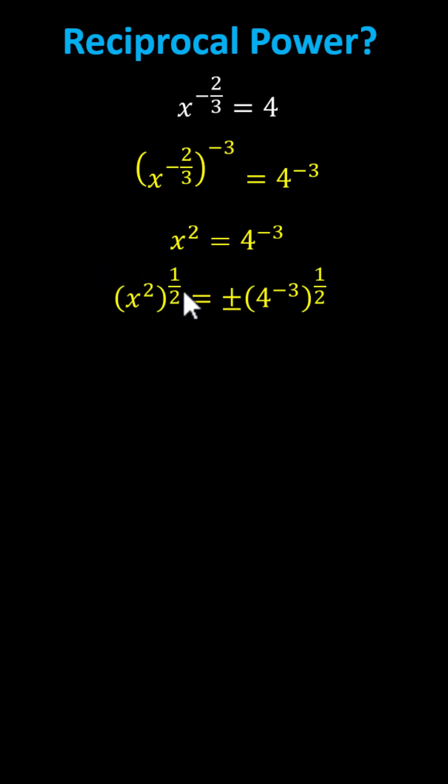On the left, multiplying the exponents, we have x to the power of one, or just x, equals plus or minus four to the power of negative three-halves.